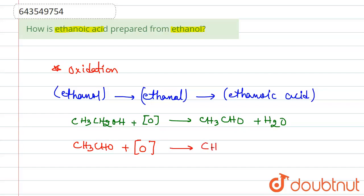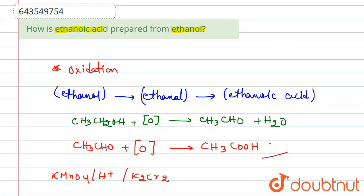CH₃COOH — this is our ethanoic acid. The oxidizing agents used in these reactions are KMnO₄ (acidified with H⁺) or K₂Cr₂O₇, etc.